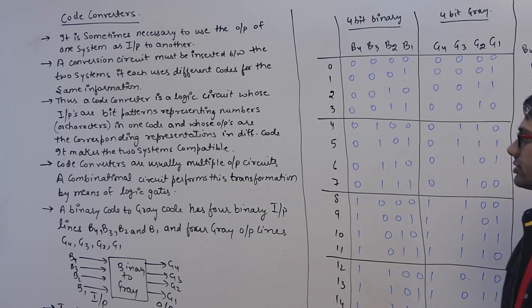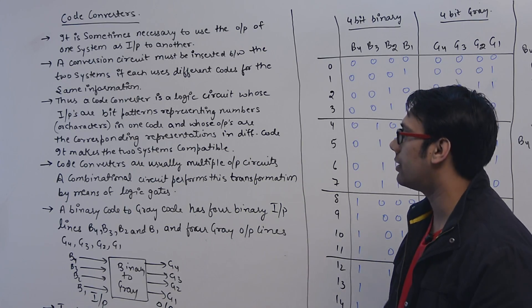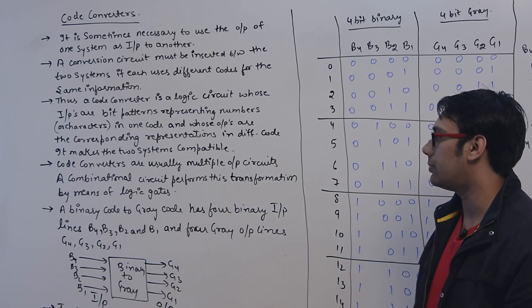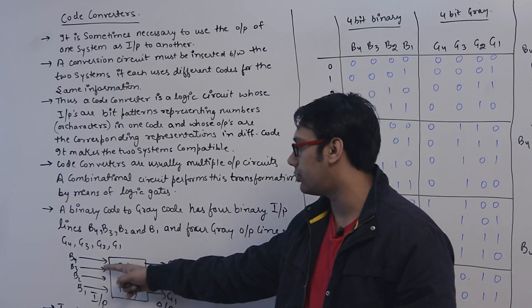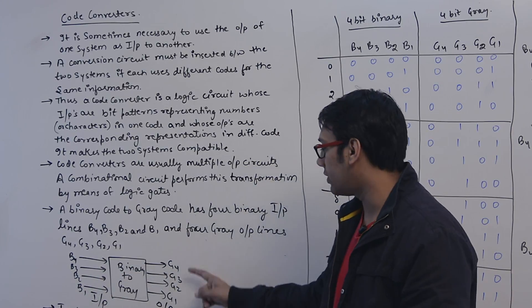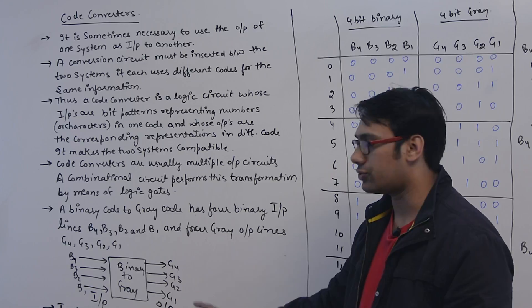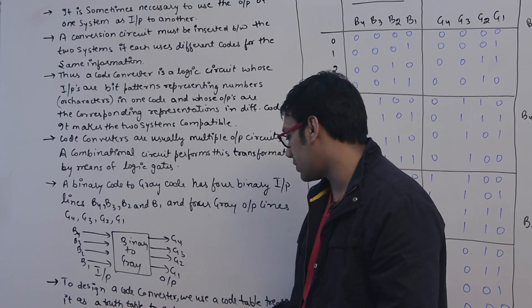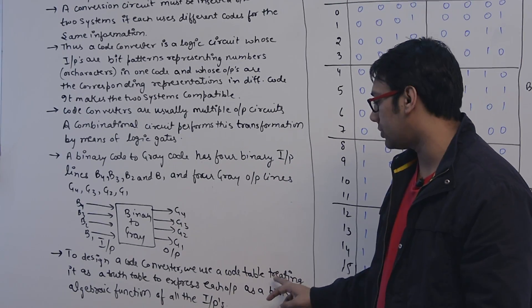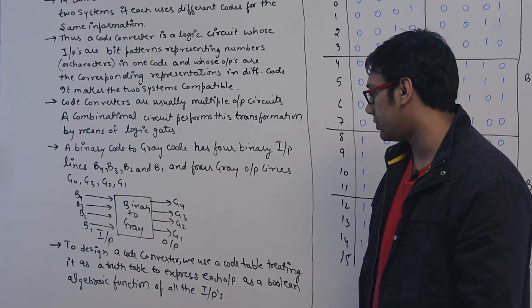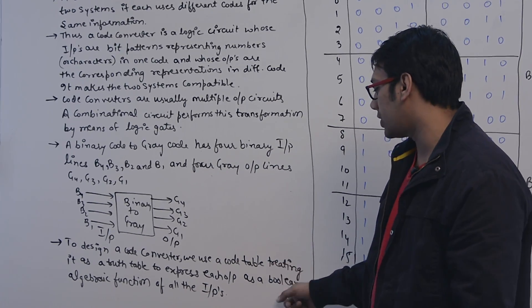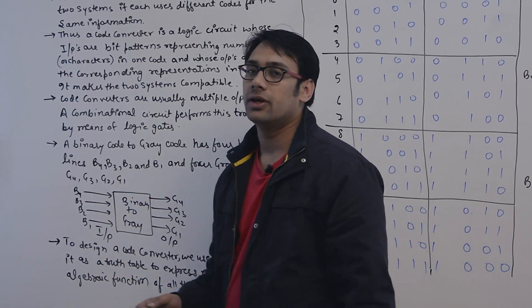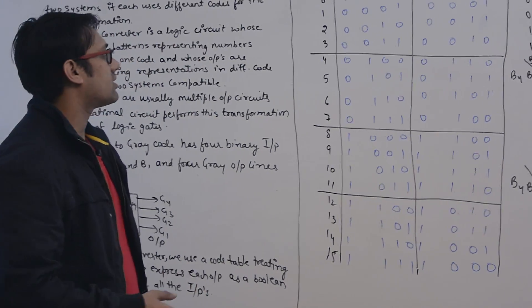For example, here is a logical diagram of code converter where it is going to take some binary codes as input—this is a 4-bit binary code—and this is going to give a 4-bit gray code as output. These code conversions are usually multiple output circuits. A binary code to gray code has four binary input lines—B4, B3, B2, and B1—and output lines G4, G3, G2, and G1.